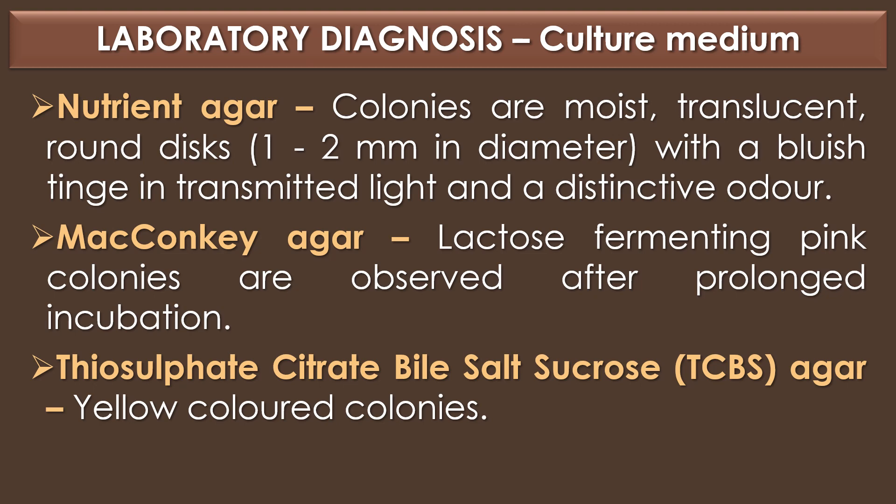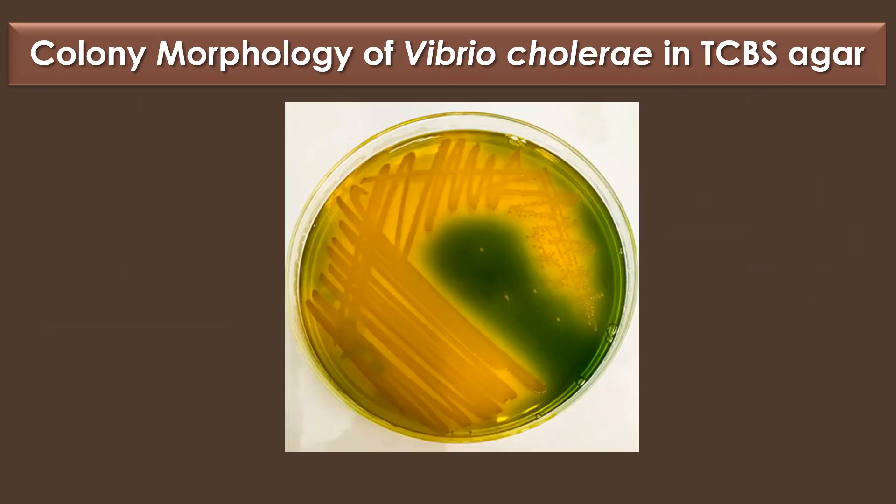Colony morphology on culture medium: On nutrient agar, Vibrio cholerae colonies are moist, translucent, round discs measuring 1–2 mm in diameter, with a bluish tinge in transmitted light and a distinctive odor. On MacConkey agar, lactose-fermenting pink colonies are observed after prolonged incubation. The TCBS agar — thiosulfate citrate bile salt sucrose agar — is the selective medium for Vibrio cholerae, and on TCBS agar, Vibrio cholerae produces yellow-colored colonies.